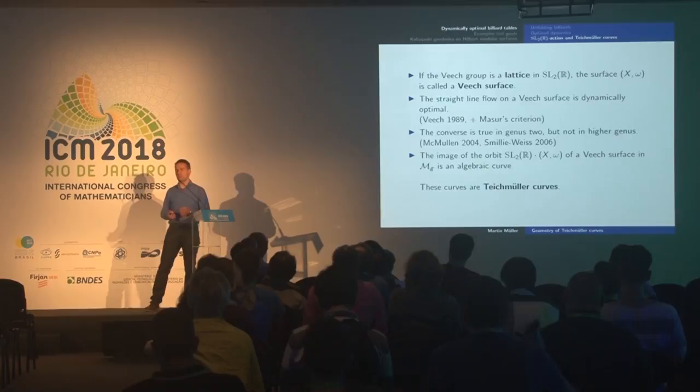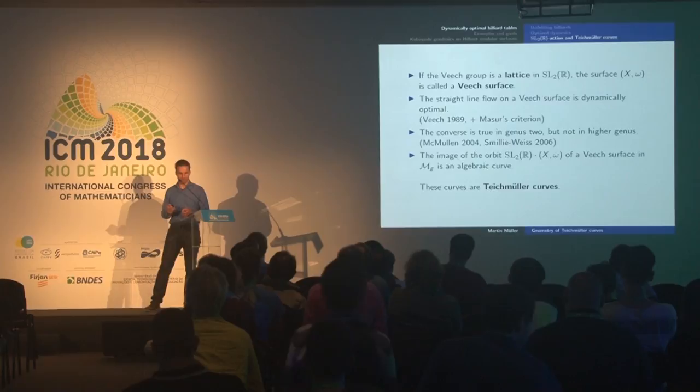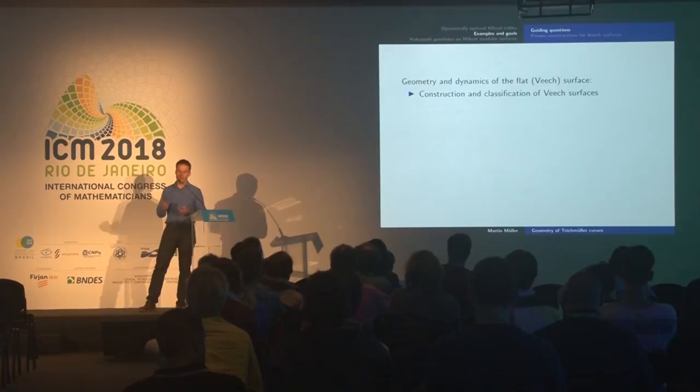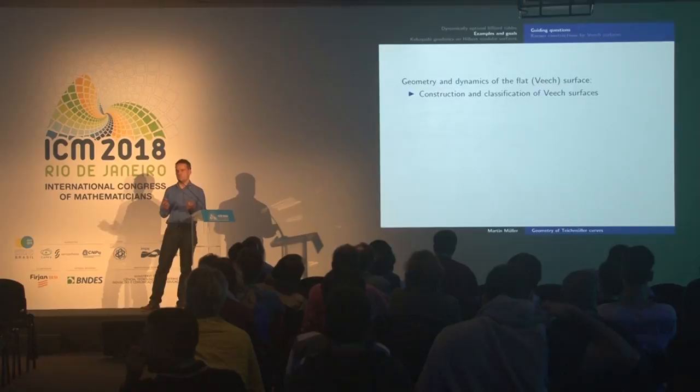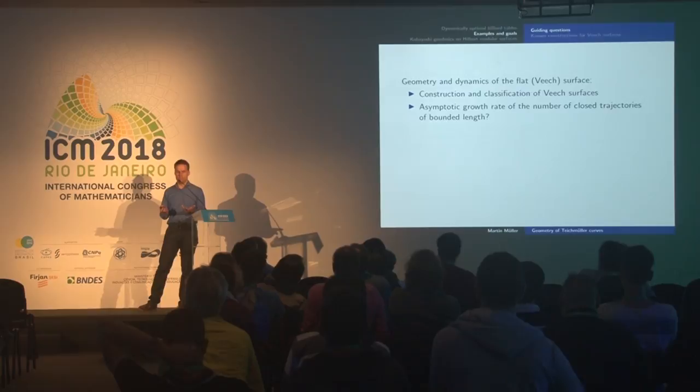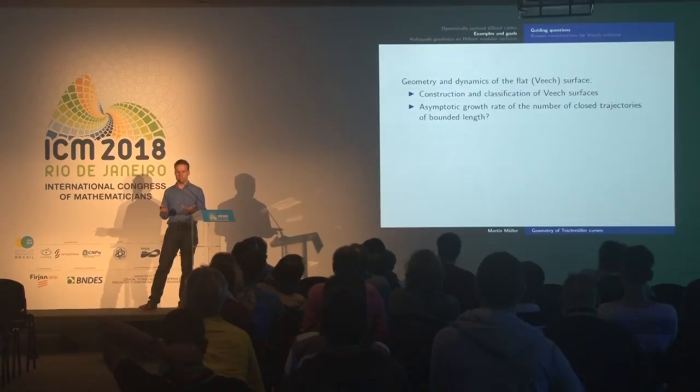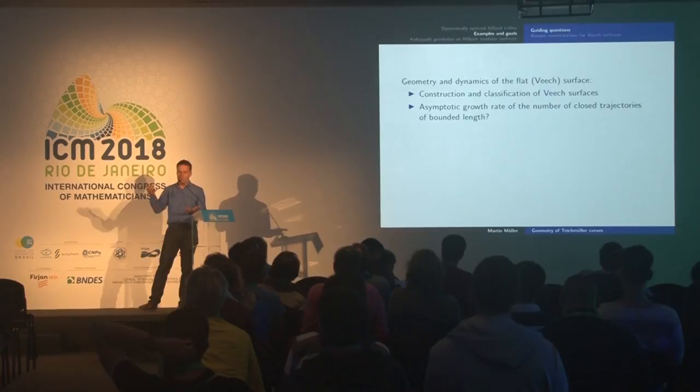So what is the goal of this subject? The obvious question is: besides the two examples you've seen, construct other examples and give a classification of Veech surfaces. Then there are questions about trajectories on those Veech surfaces: how many closed trajectories are there? How is the asymptotic growth rate of the number of trajectories? What type of closed trajectories do you see?